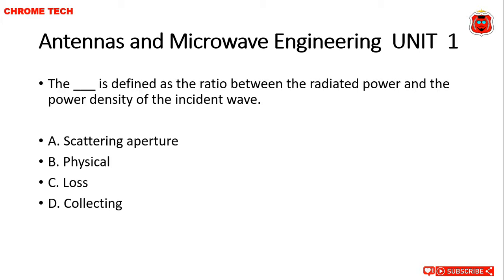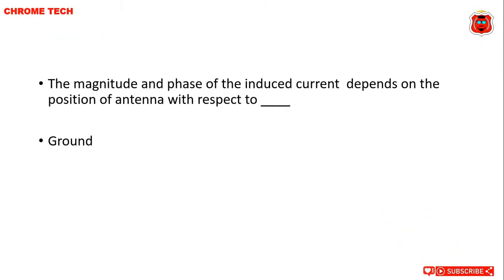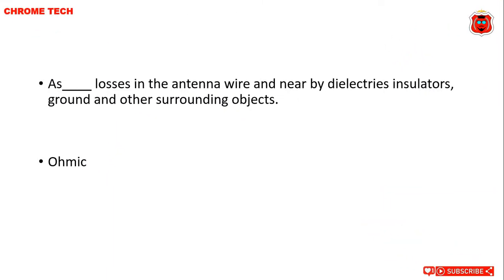Next question: the magnitude and phase of the induced current depends on the position of the antenna with respect to dash. Answer: ground. Next: dash loss in the antenna wire and nearby dielectric insulated ground and other surrounding objects. The correct answer is ohmic loss.